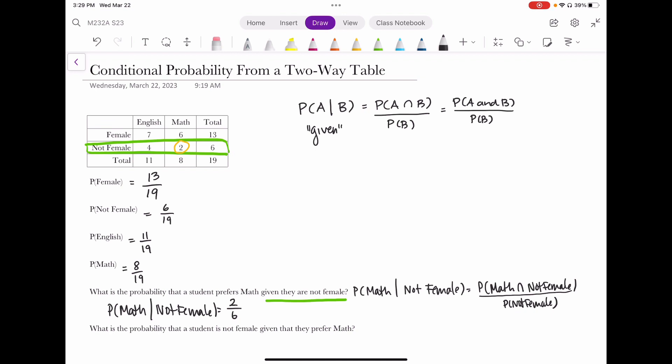The probability of preferring math and not being female, we've already circled that. That's two out of 19 total divided by not females, which is six out of 19. And what winds up happening is you're using marginal calculations that are always out of the total. And so these 19s wind up canceling when you reduce. If you're using rules of fractions, that's the same thing as multiplying by the reciprocal. And so I have two over six, which is one third.